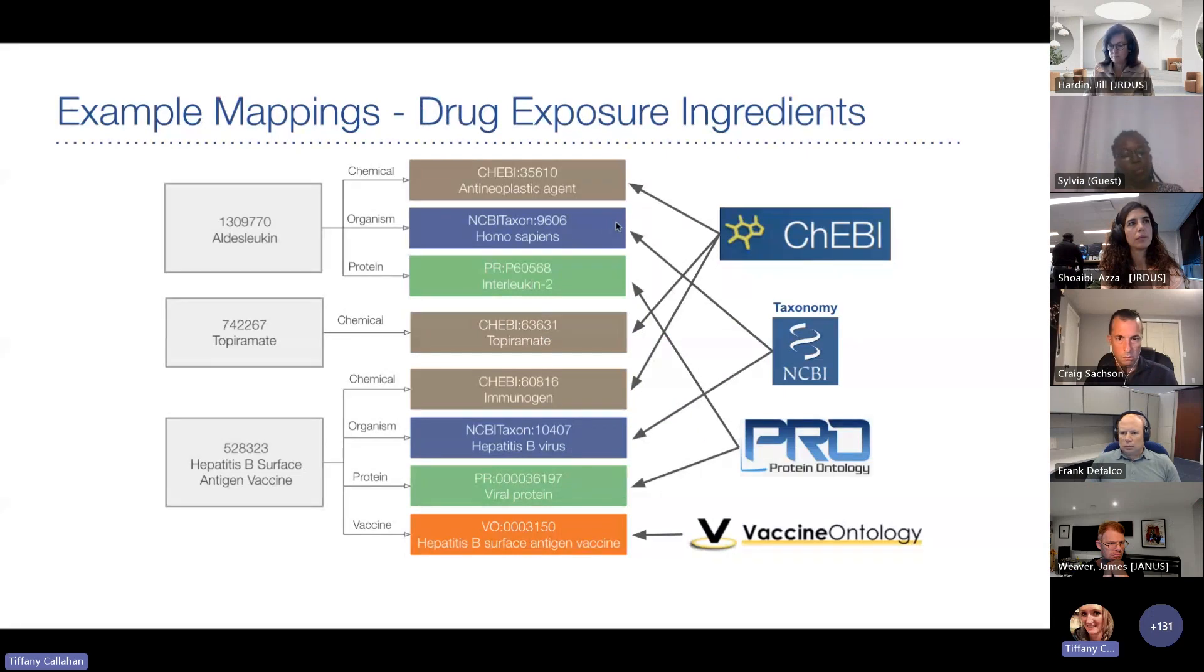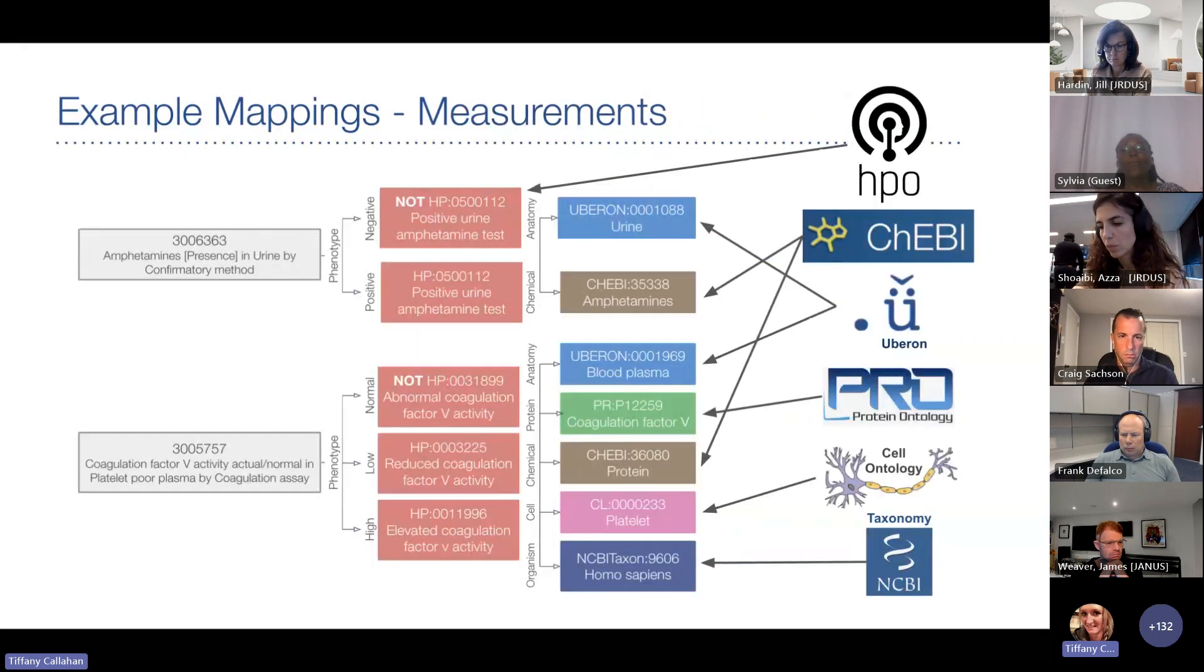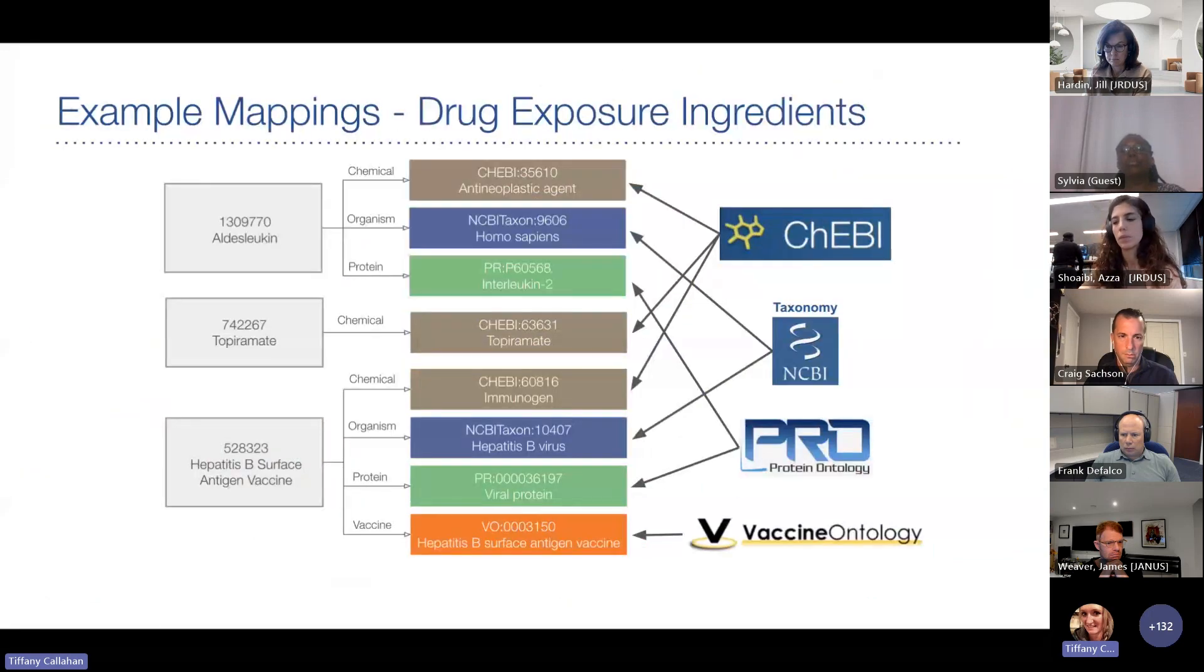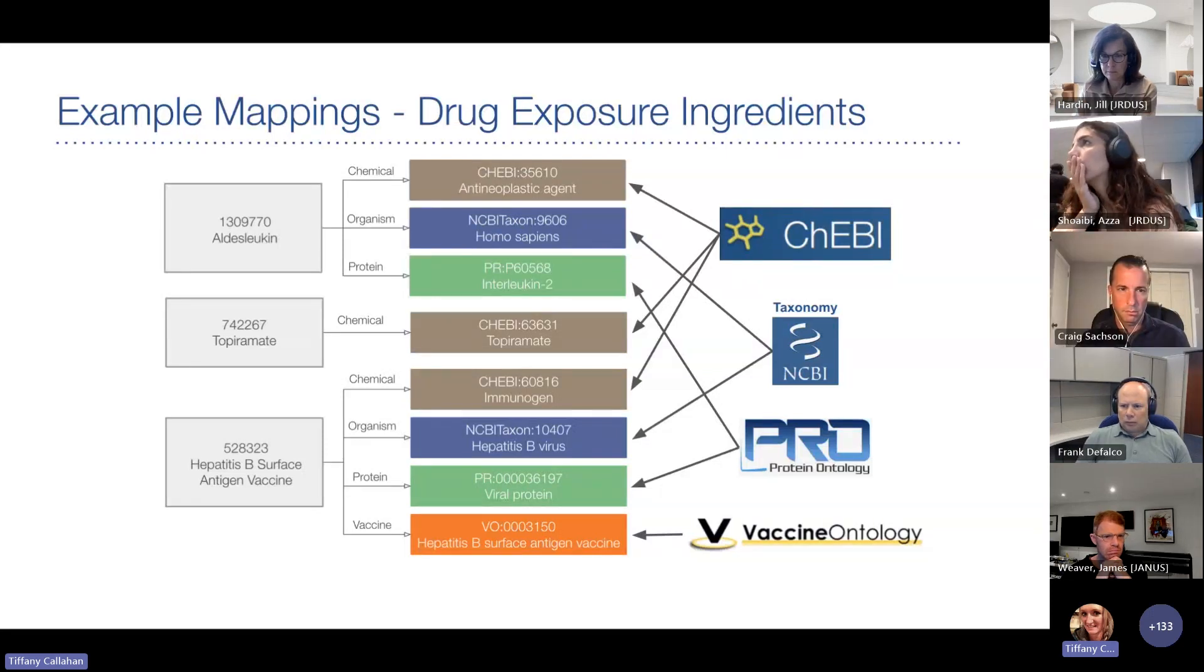So drug exposure ingredient concepts were mapped to four ontologies. Chemicals were mapped to KEBI, organisms were mapped to the NCBI taxon, proteins were mapped to the protein ontology, and vaccines were mapped to the vaccine ontology. OMOP concepts were mapped to completeness across only those ontologies that made sense. So it wasn't the goal to map everything to each of these ontologies, but to create the best mapping that best represented the OMOP concept. And it shows three different versions of a mapping within this domain on the slide, where the topomeric concept was the most simple and straightforward mapping compared to desleukin, which required three ontology concepts. And in this case, it's a human antineoplastic agent that involves the protein interleukin 2.